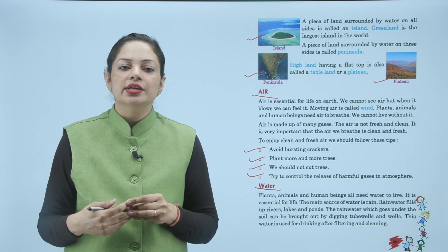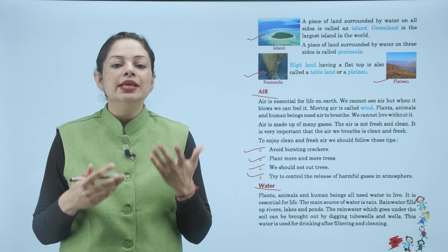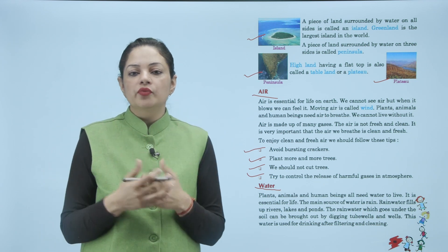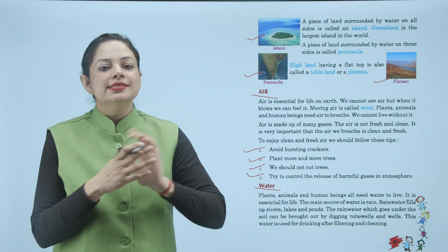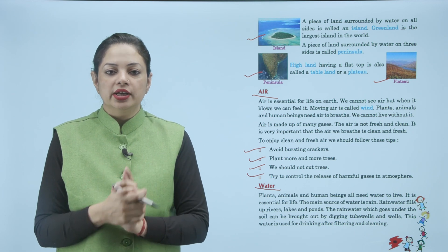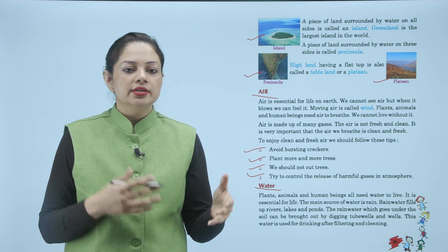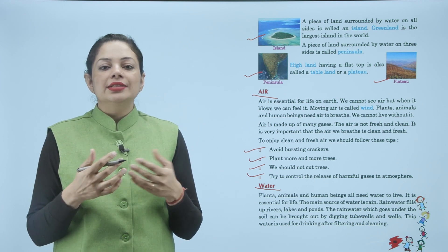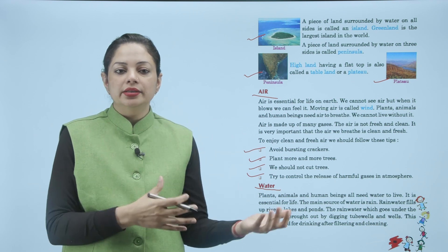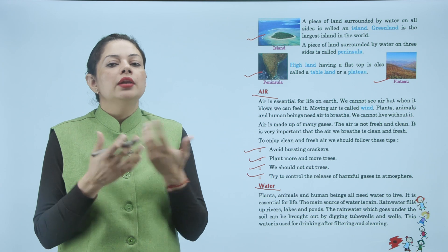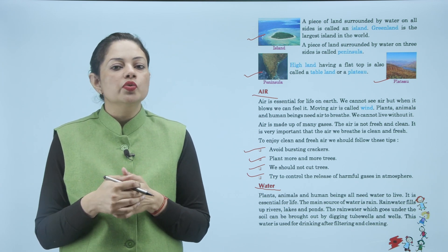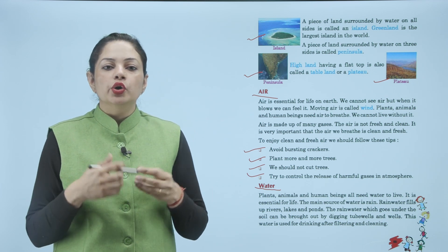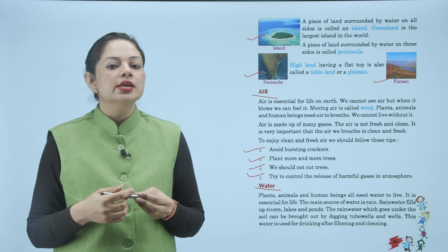Rain water fills up rivers, lakes and ponds. The rain water which goes under the soil can be brought out by digging tube wells and wells. जैसे गाँव में tube wells और कुएँ होते हैं, उन्हें dig करके हम वो पानी जो धरती में चला जाता है उसको ऊपर ला सकते हैं। This water is used for drinking after filtering and cleaning।